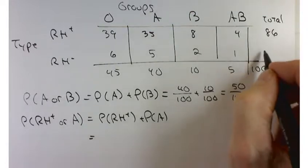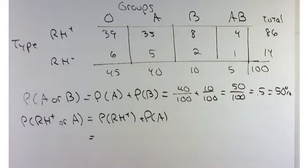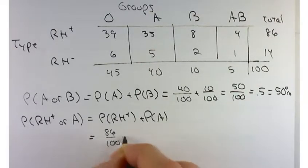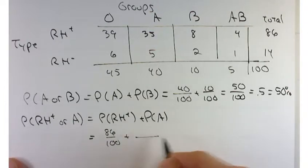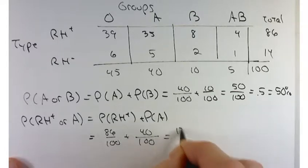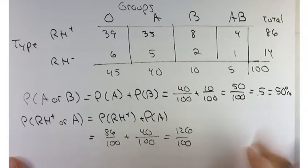What's the probability of getting somebody that's RH positive? Yeah, 86%. 86 over 100. What's the probability of getting somebody of blood type A? 40 over 100. So 126 over 100.